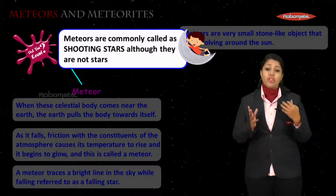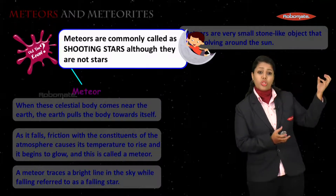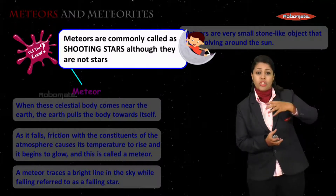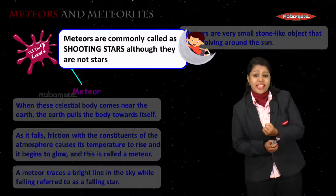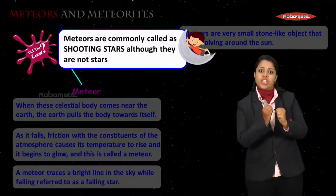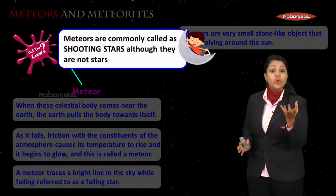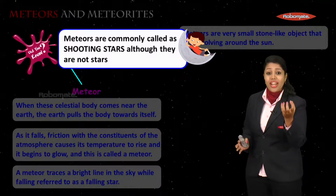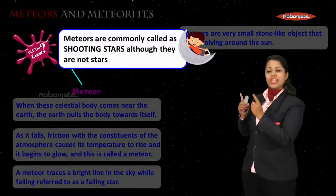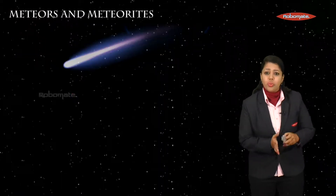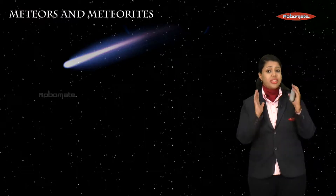Shooting stars — called 'tuta tara' — are none other than meteors. Whenever an object comes close to Earth's atmosphere, the atmosphere pulls it towards itself, causing friction, which makes the object begin to glow. When it falls down, we perceive it as a shooting star.